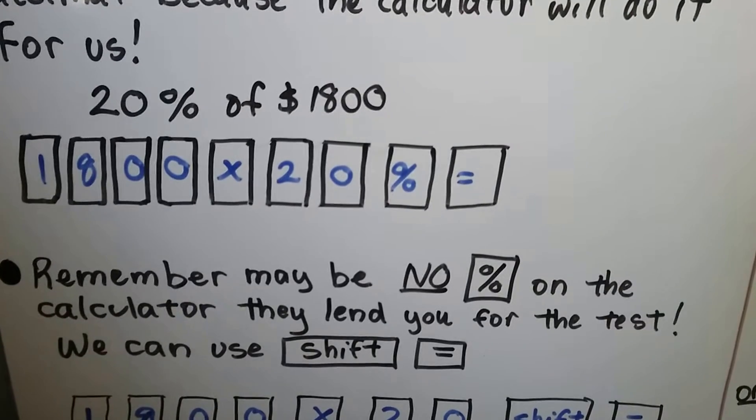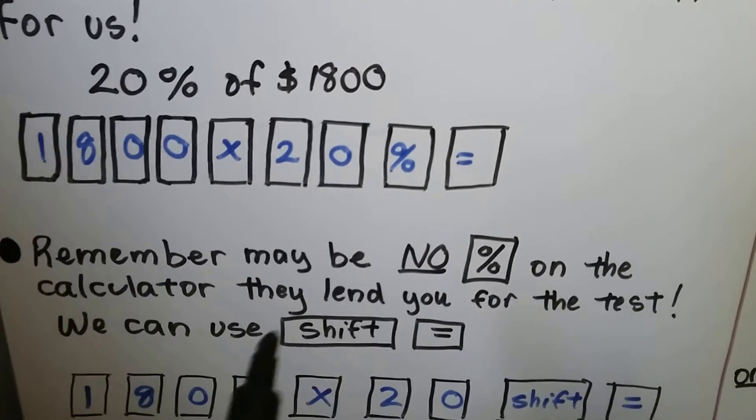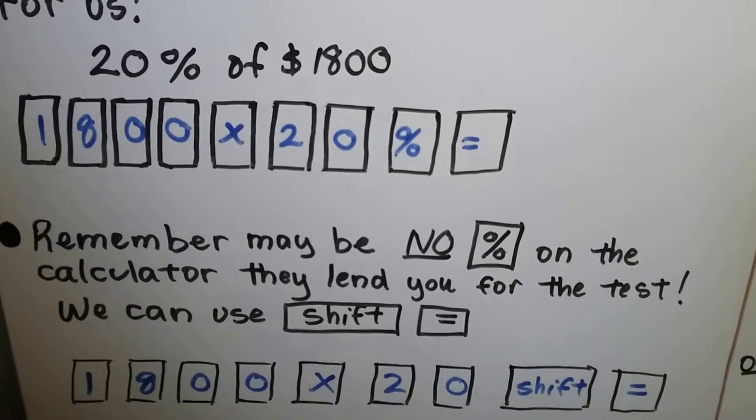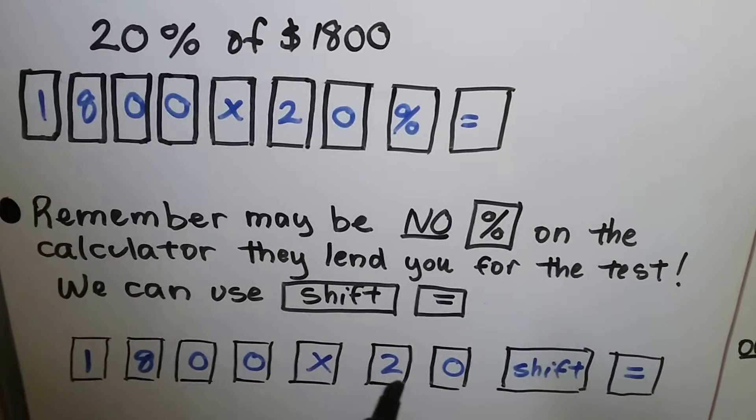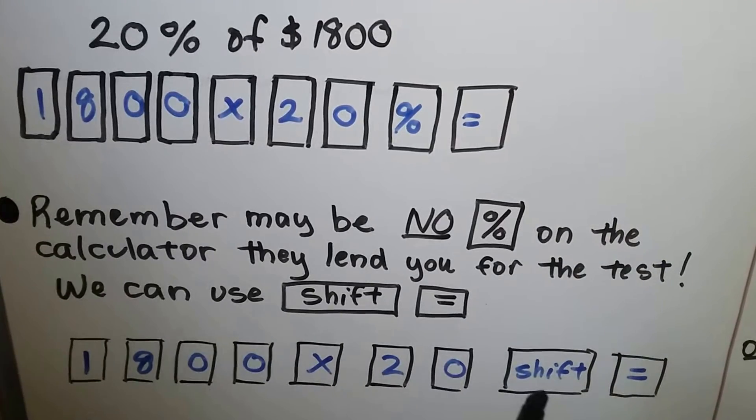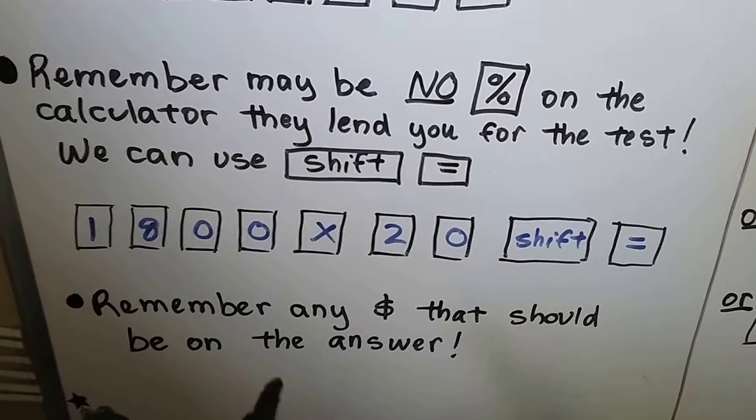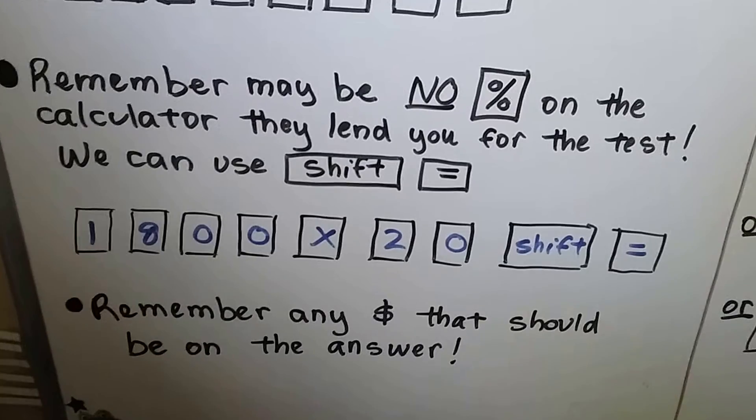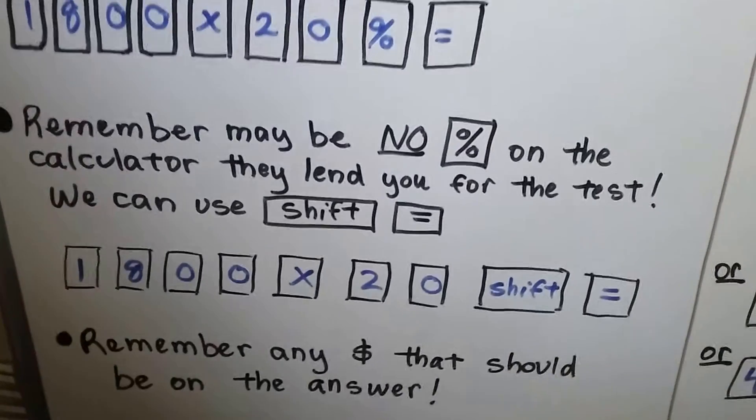It's a Casio FX260. If that's the one you get, there's no percentage sign. You hit shift equals instead. So instead of hitting this percent sign, after the 2-0, you would hit shift equals. And remember, any dollar sign that should be on the answer. So if you're doing money, make sure your answer has that dollar sign.